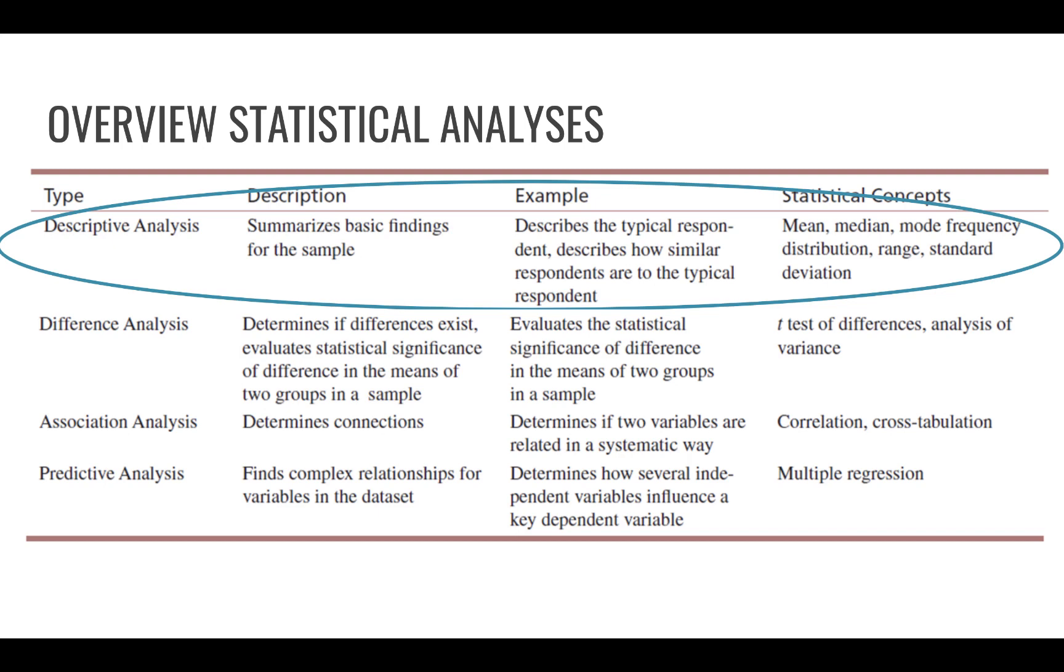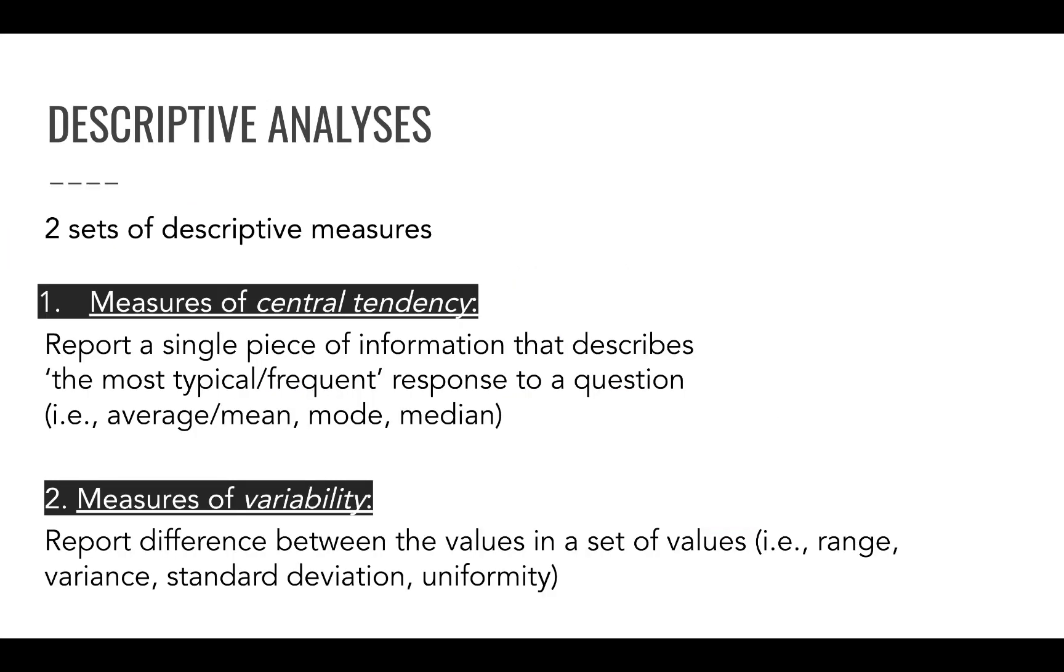So today we start with descriptive analysis. Within descriptive analysis, when you try to describe the makeup of your sample, that could be demographic makeup or behavioral makeup or in any other way you describe your sample, you can use two different sets of descriptive measures. Firstly, you can use measures of central tendency. Secondly, you could use measures of variability. Measures of central tendency means that you report a single piece of information. Think of, for example, an average or a mean or a mode or a median that describes the most typical or most frequent response to a question. You try to describe your average respondent. What is the most commonly answered answer? What is the most typical respondent?